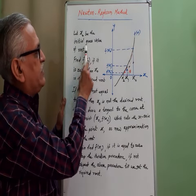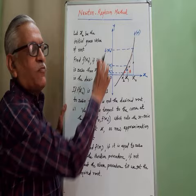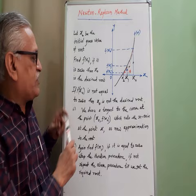Let x0 be the initial guess value. We start with the first value for the root as x0. Then on the graph, that value is f of x0. If that value of f of x0 is 0,